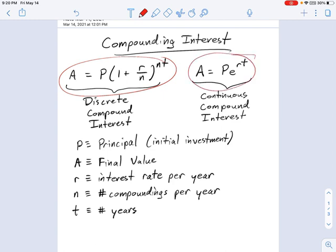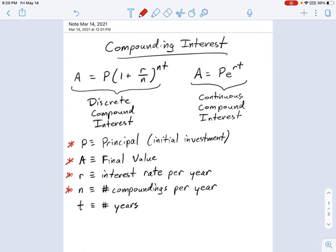And there's not too much difference between them in terms of the variables. P is your principle, that's your initial investment. A is the final value of that investment after a certain period of growth. R is your interest rate per year. N is the number of compoundings per year. What a compounding is, is how many times per year you calculate that interest. And the more times you calculate the interest, generally the higher the interest you get paid is. And T is the number of years.